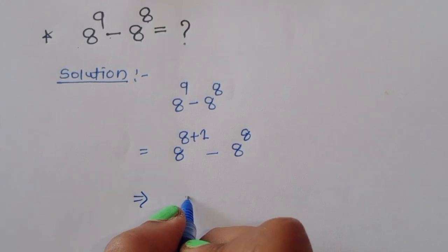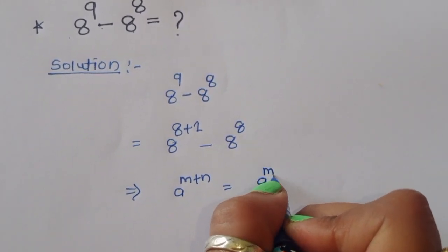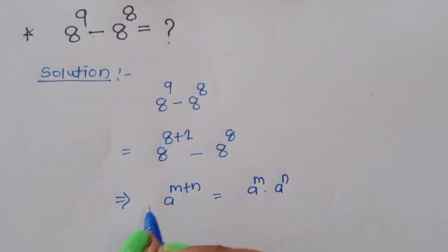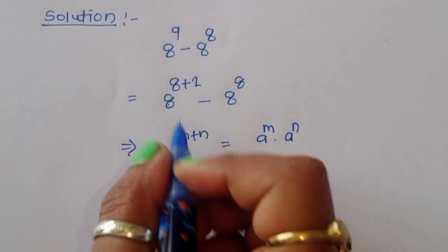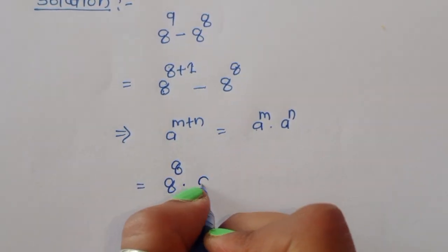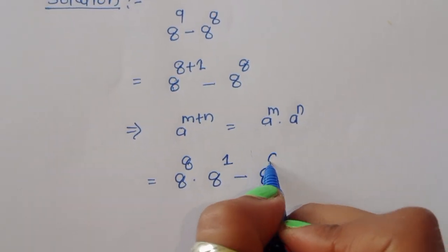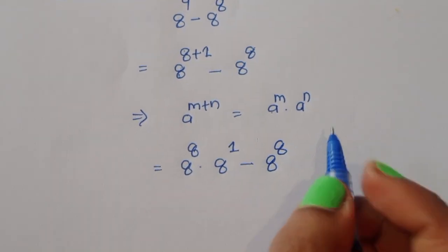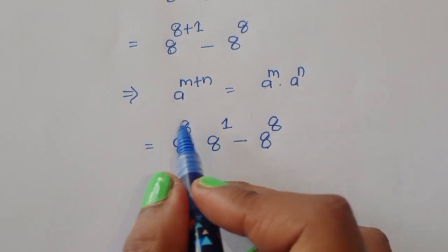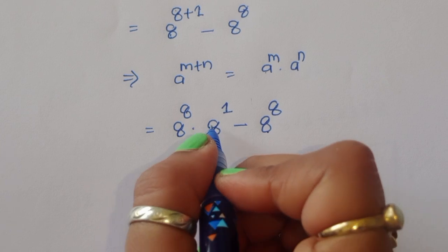Now we know one formula: if a power m plus n is given, we can write it as a power m times a power n. Using this formula here, we can write 8 power 9 as 8 power 8 times 8 power 1, minus 8 power 8. We have 8 power 8 in both terms.